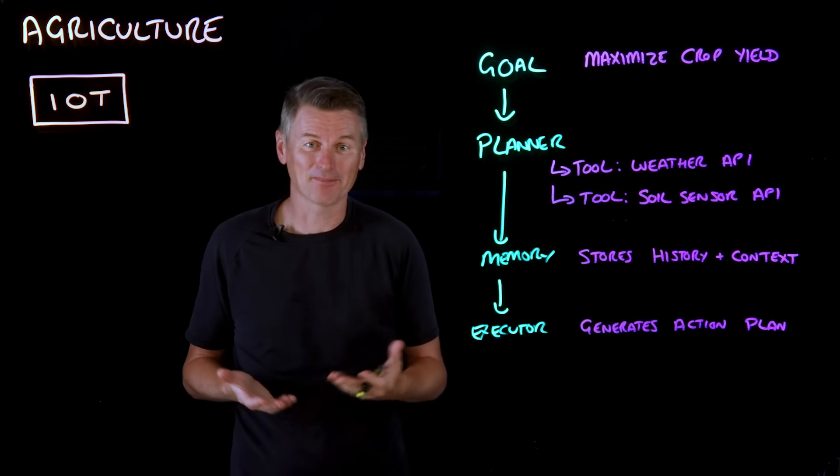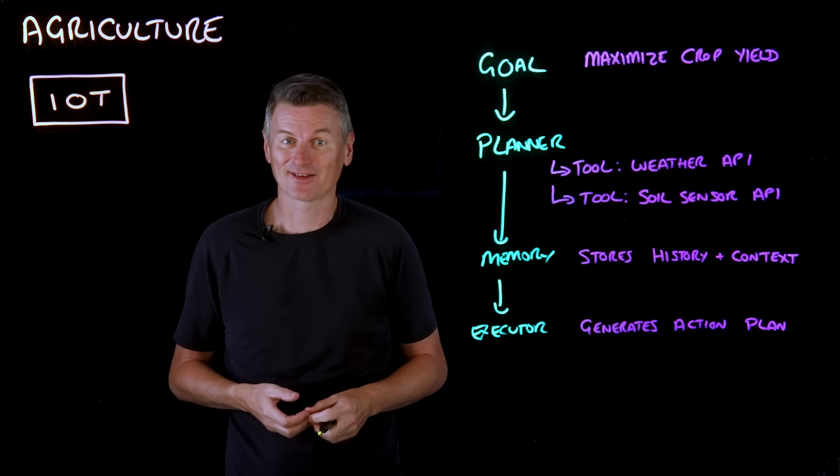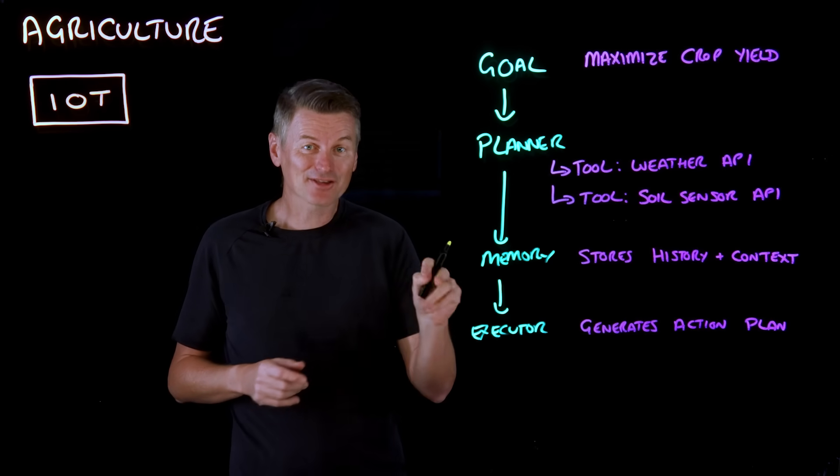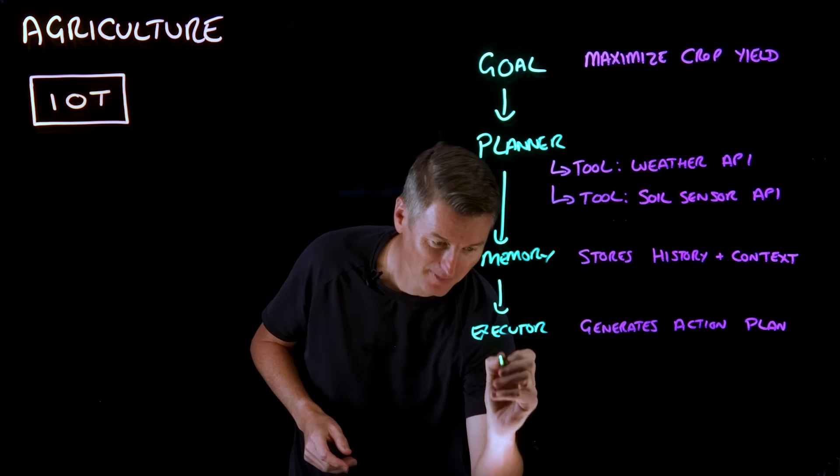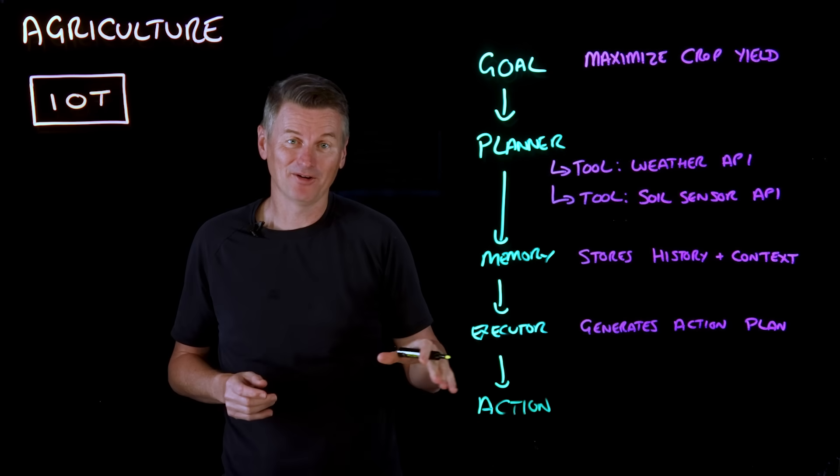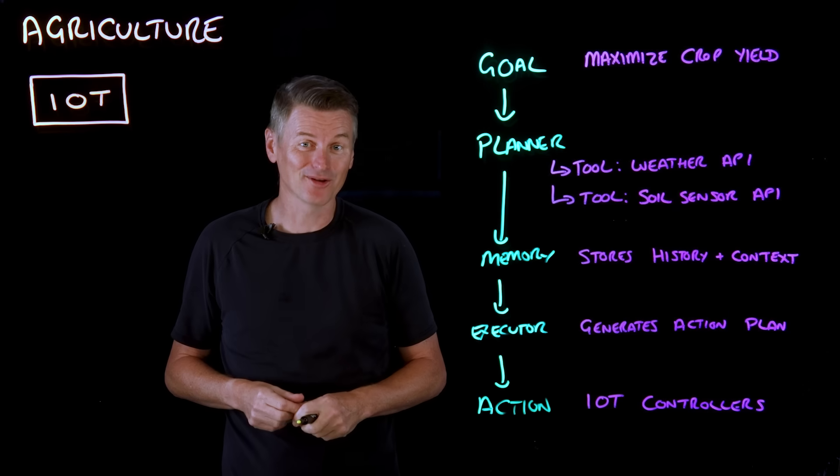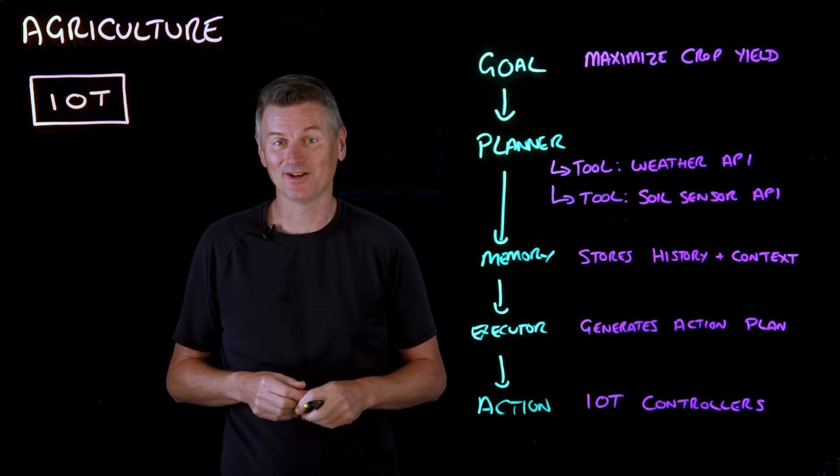So perhaps the agent derives the appropriate action in this particular case is to turn on irrigation for the next two hours. Now that execution plan, that's passed to the final stage, which is the action component, which in this case might integrate with Internet of Things controllers to perform the irrigation process.